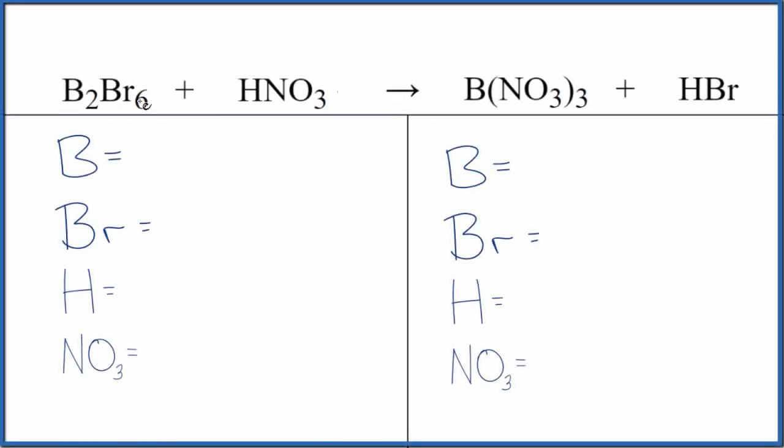Let's balance the equation for B2Br6 plus HNO3. This is diboron hexabromide plus nitric acid. We'll also take a look at the type of reaction.